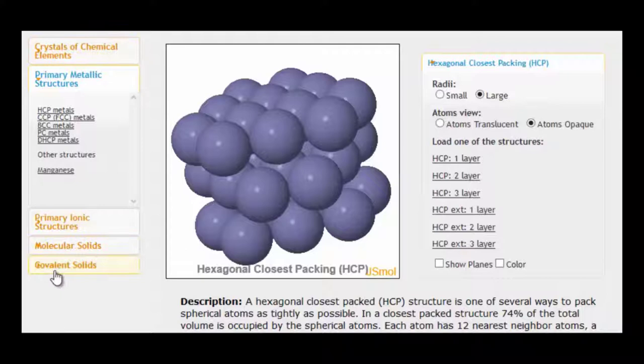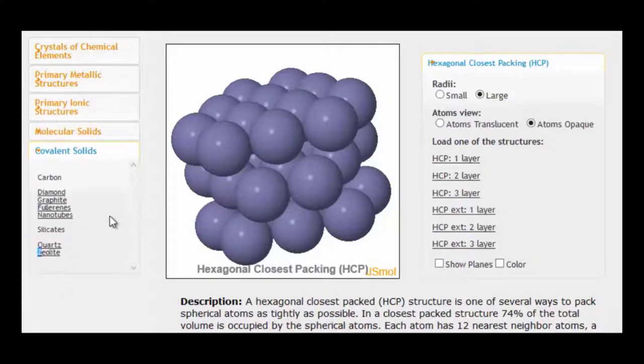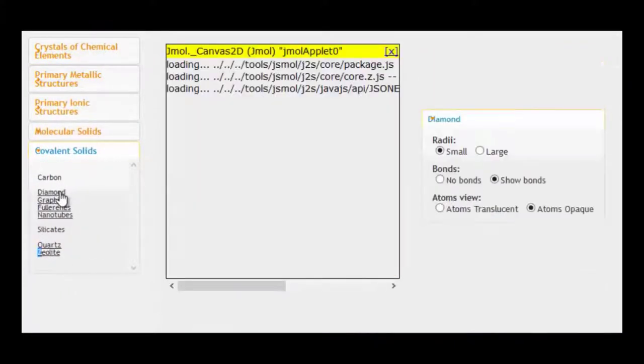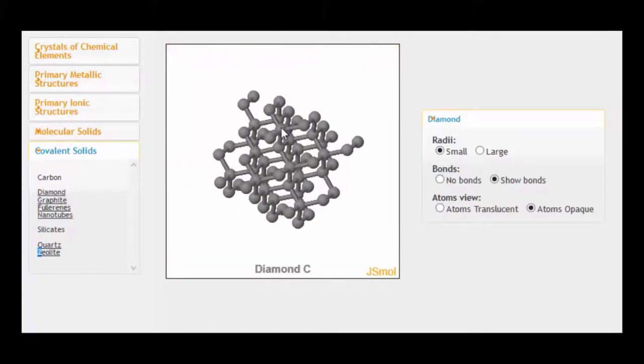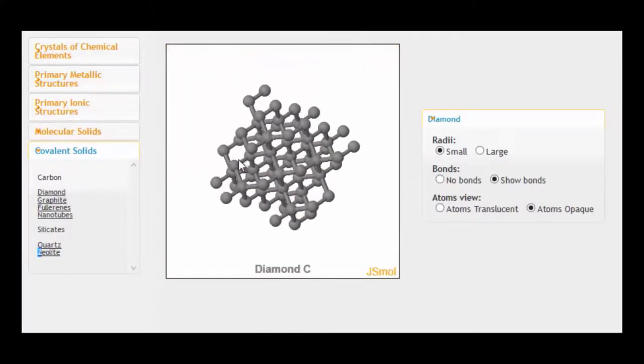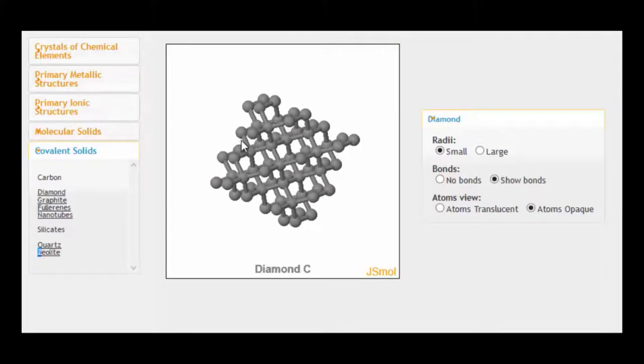So now let's look at a covalent network solid. I'll try diamond. So here's a small section of diamond. And if you look carefully, you can see if we pick out a carbon atom here, you can see that that carbon atom is forming four bonds to four other carbon atoms.